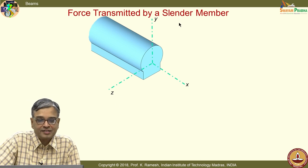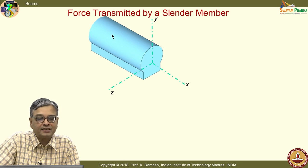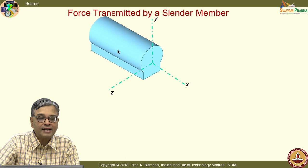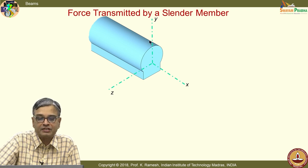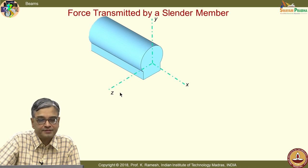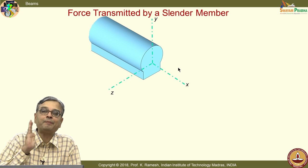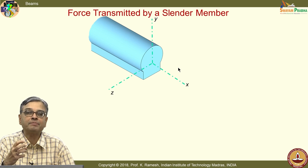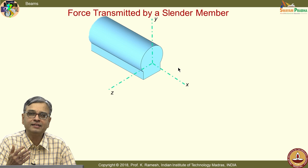Let us now get to our understanding of a slender member. I have shown a small portion of the member — imagine it is very long, with cross-sectional dimensions much smaller compared to its length. I have taken a member with a plane of symmetry. I have the x-axis along the axis of the member, and y and z axes. If I pass an imaginary plane through this slender member, what are the forces that it can transmit?